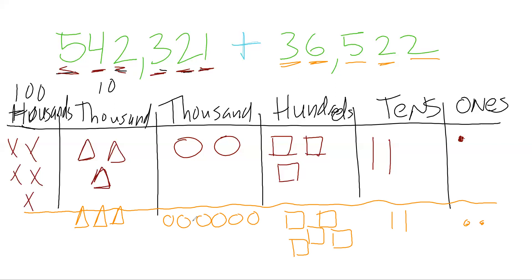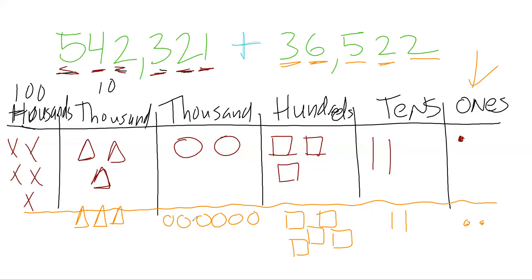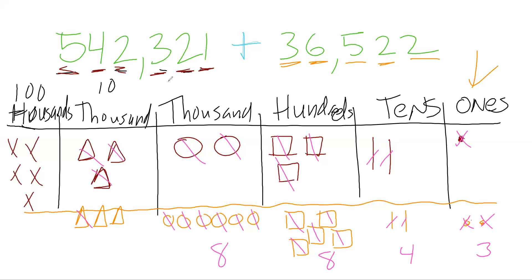Now the last step — count the answer. Always start with your ones place. I count all the ones: one, two, three — write a three. Tens: one, two, three, four — write a four. Hundreds: one through eight. Thousands: one through eight. Ten thousands: one through six. Hundred thousands: five.